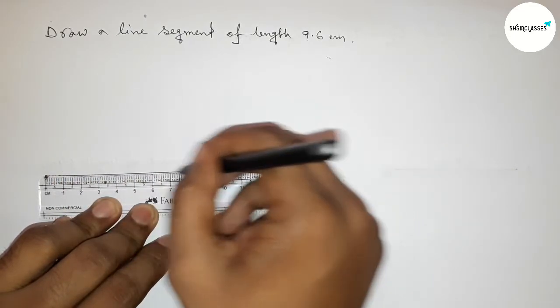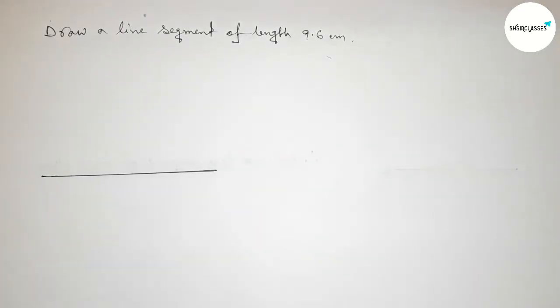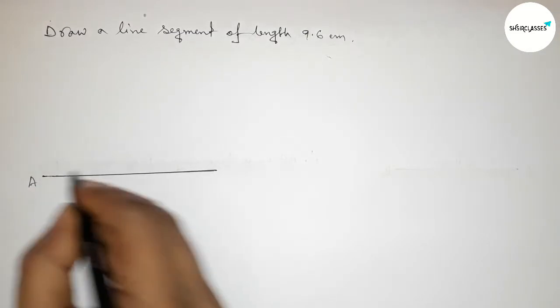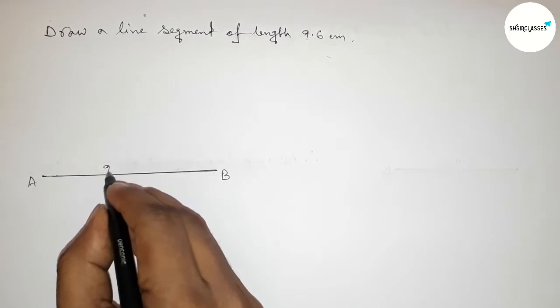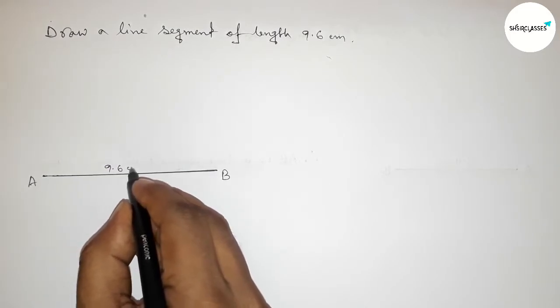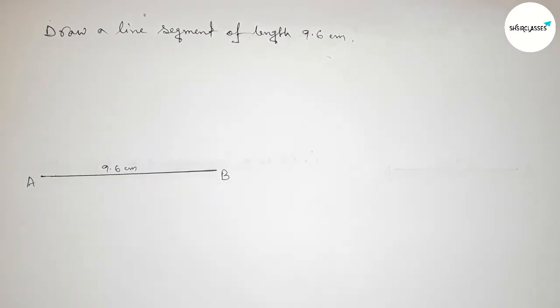Perfectly. So taking here point A and here B, so AB is a line segment of length nine point six centimeters.